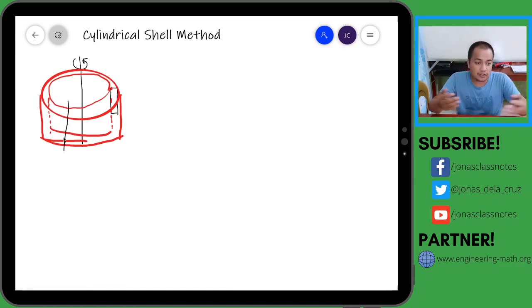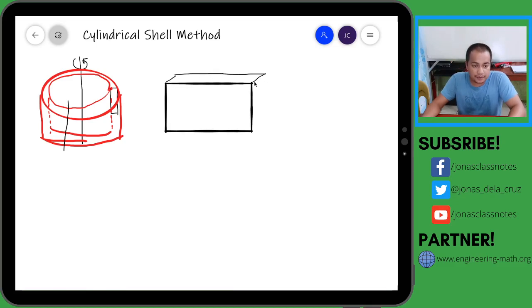And then let us try to spread the figure. So ang itsura niyan is actually a rectangular prism. Okay, ganyan yung itsura niya, no? Kapag kinat natin.